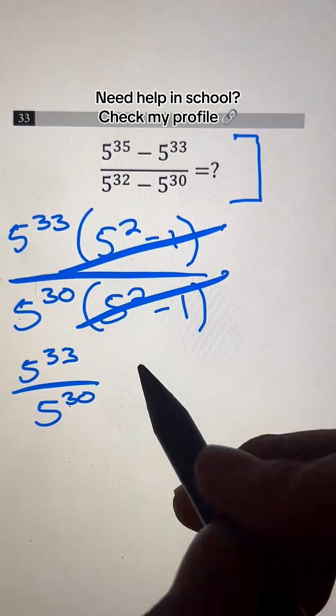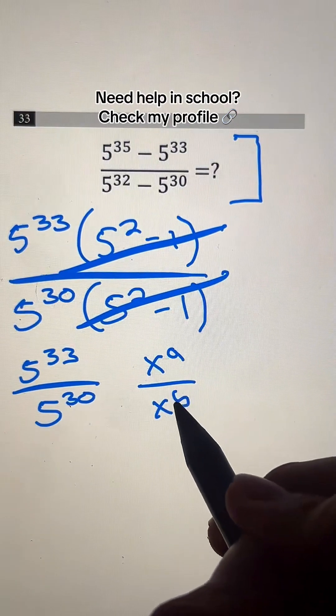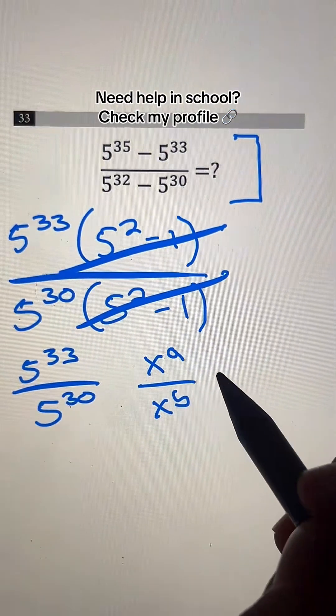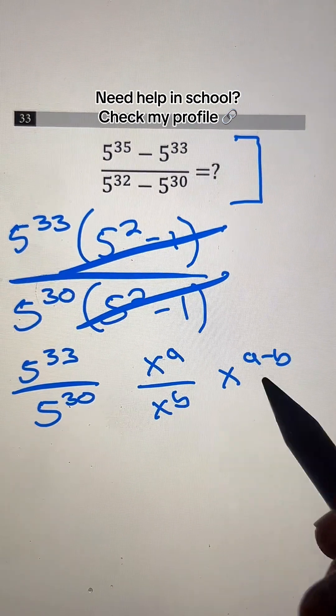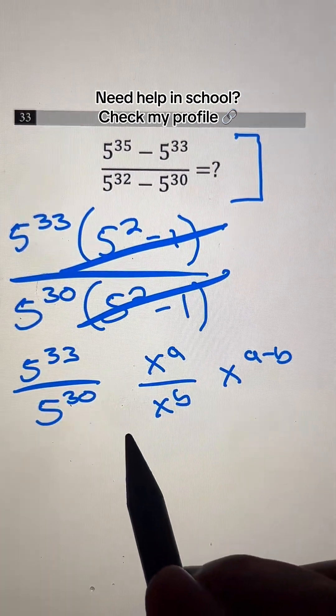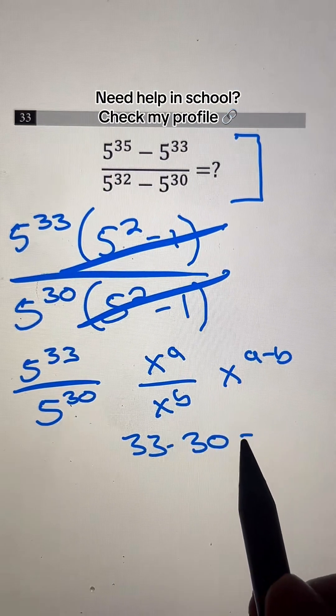And whenever we have something in the form of x to the a divided by x to the b, where they're exponents, we can just rewrite this as x to the a minus b. So we keep the base and we subtract the exponents. Our exponents are 33 and 30. So what's that? 33 minus 30 is going to be equal to 3.